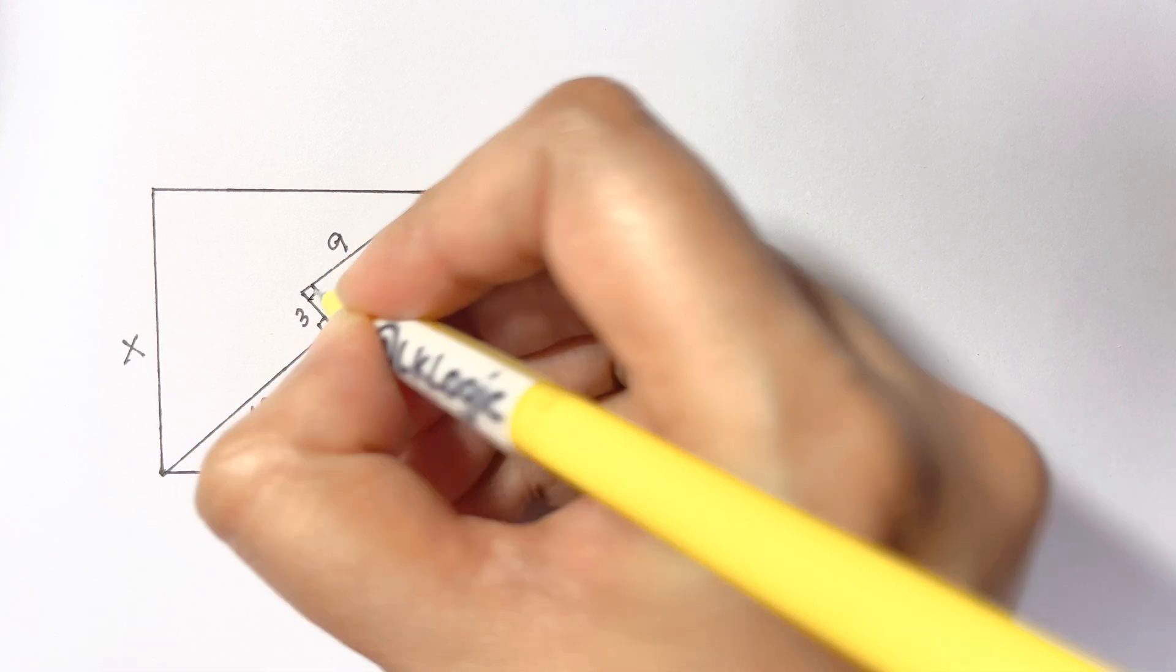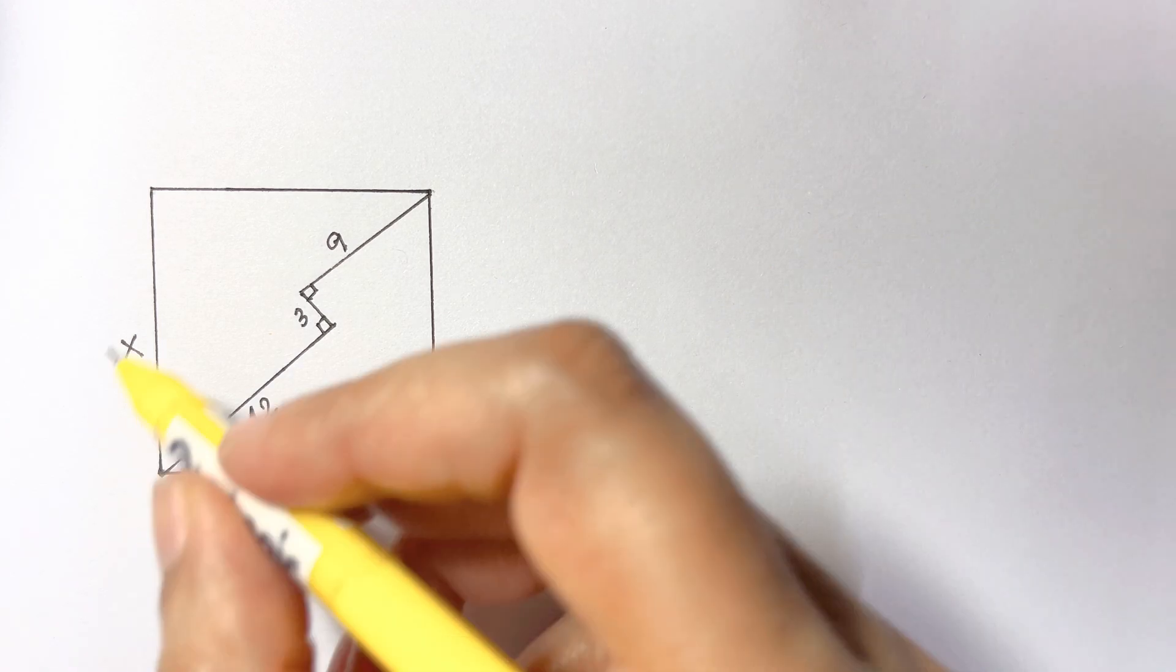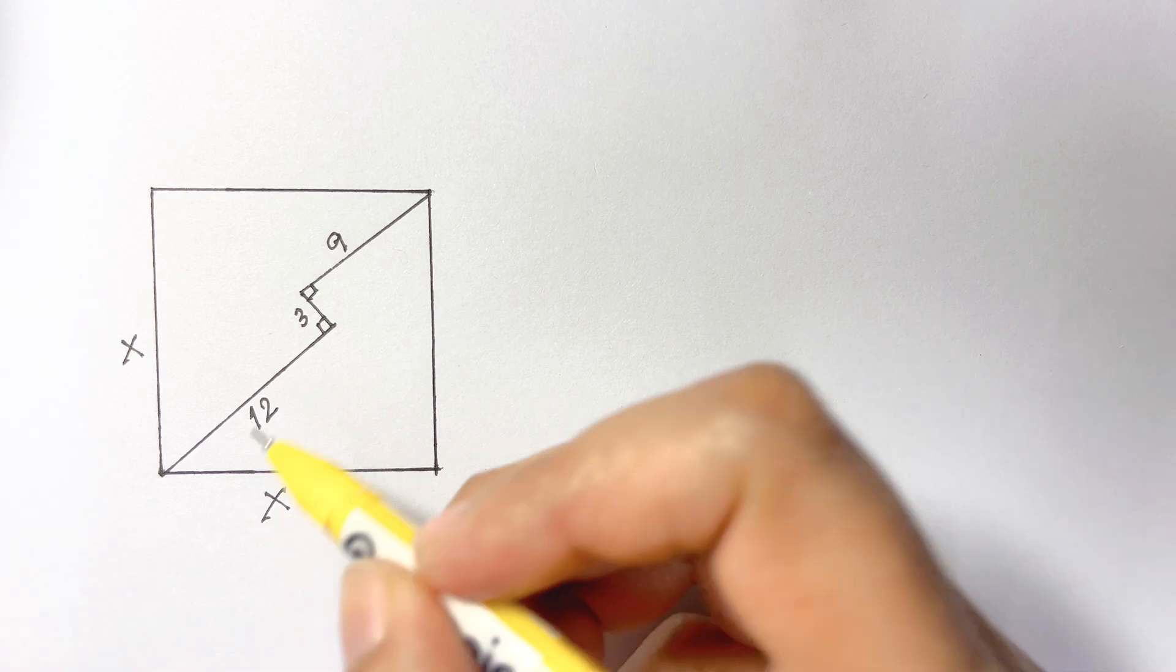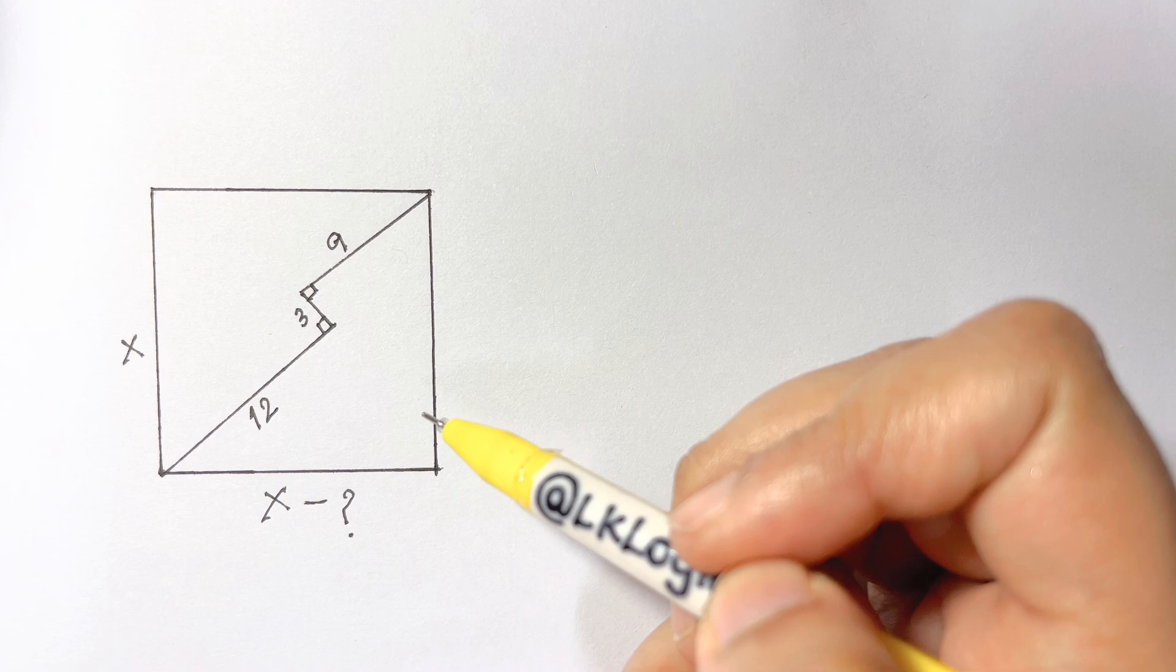Then at another right angle they have drawn a line segment of 9 and it went to the opposite corner of the square. Considering all of these conditions you have to solve for x. Pause the video and try it yourself.